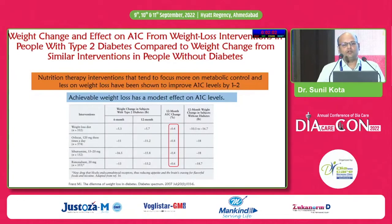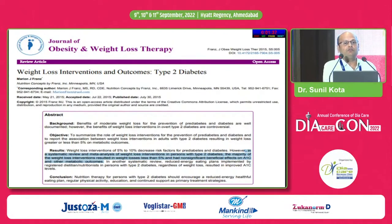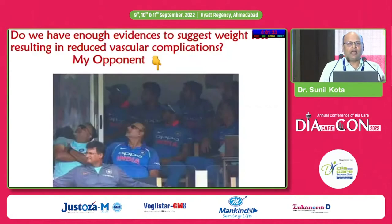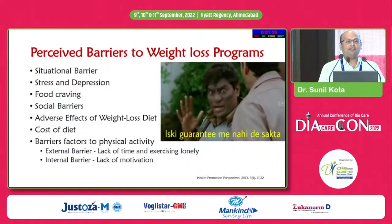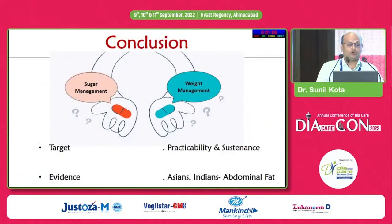Looking at commonly used weight loss strategies and their impact on HbA1c reduction: the HbA1c reduction is a paltry 0.4 to 0.8%. A 2015 paper says 5 to 10% weight loss is required to decrease the risk factors for prediabetes and diabetes, but the majority of interventions fail to even achieve 5% weight loss. We do not have enough evidence that weight loss is associated with improvement in vascular outcomes, and there are a number of perceived barriers.